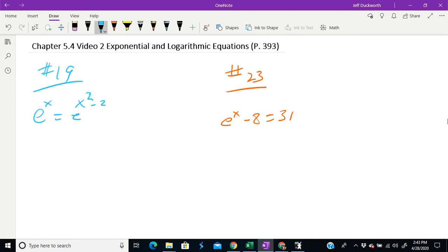We're starting with e to the x equals e to the x squared minus 2. Again, e to the a equals e to the b, then a equals b. So this just gives us x equals x squared minus 2, our one-to-one property.